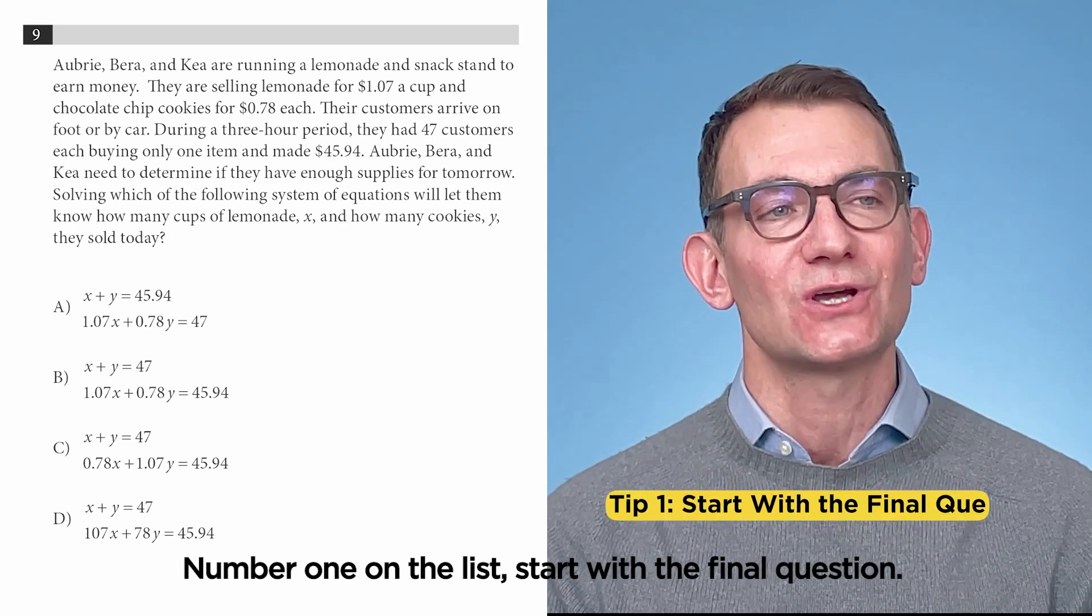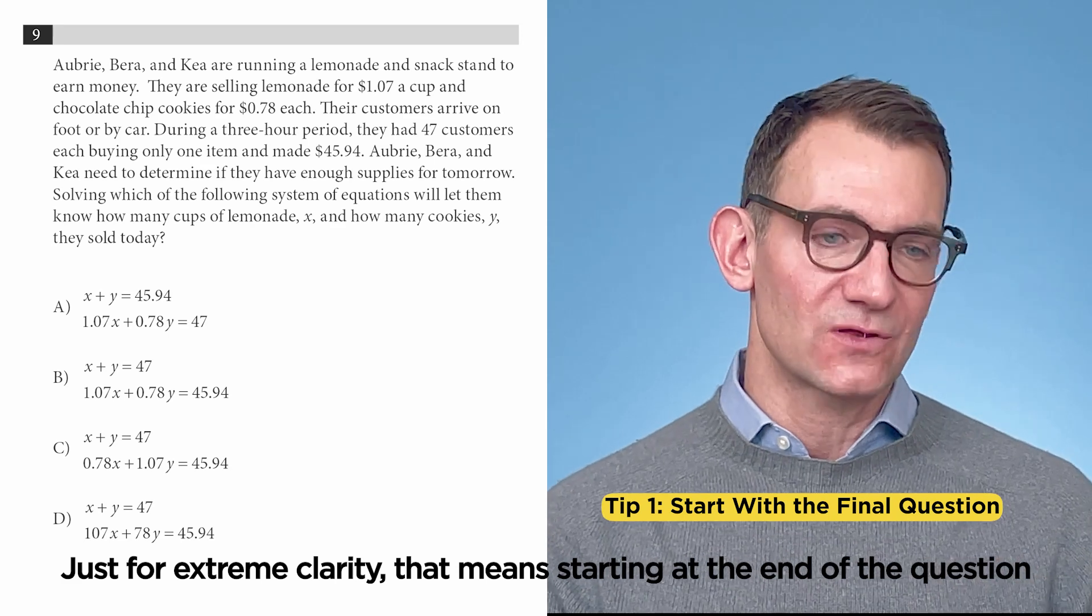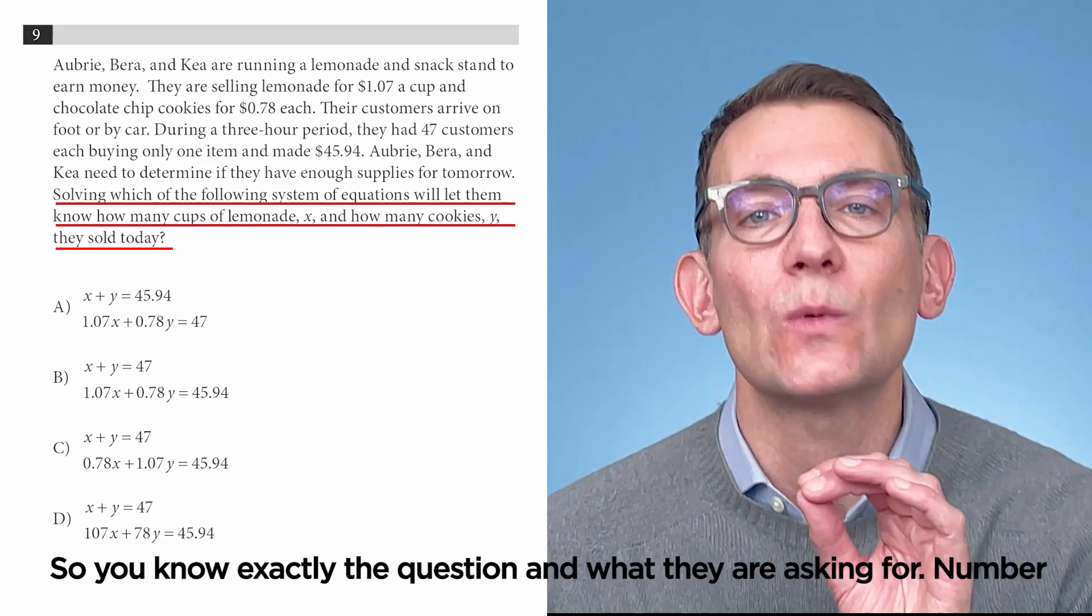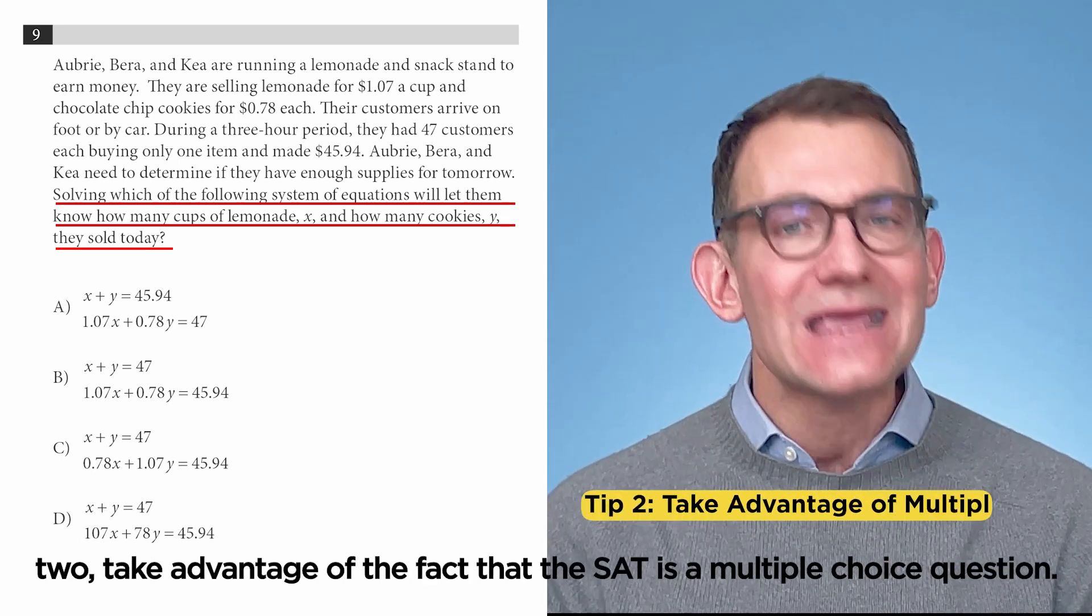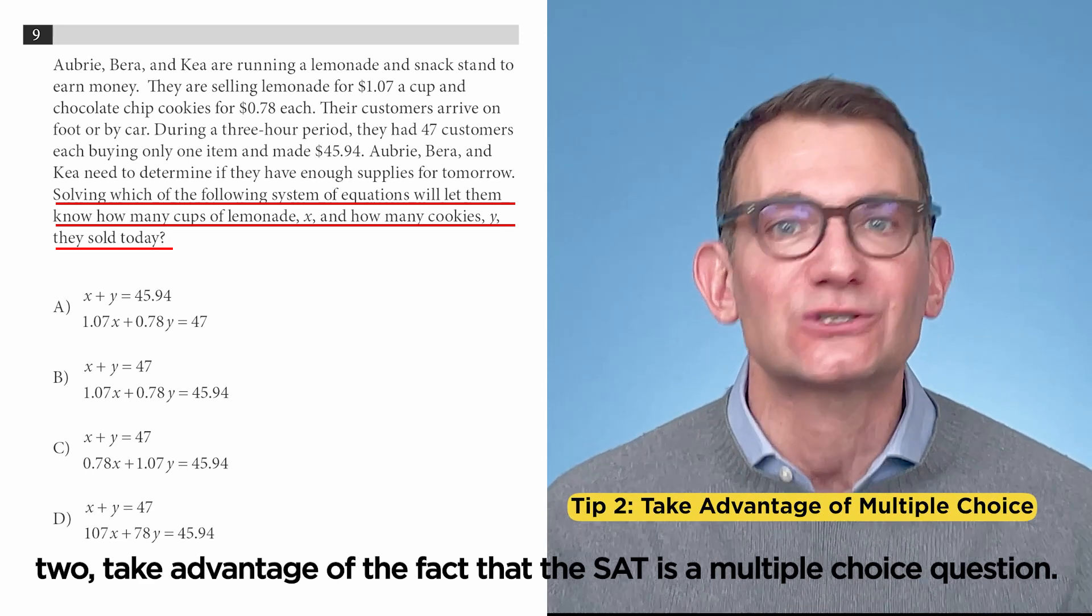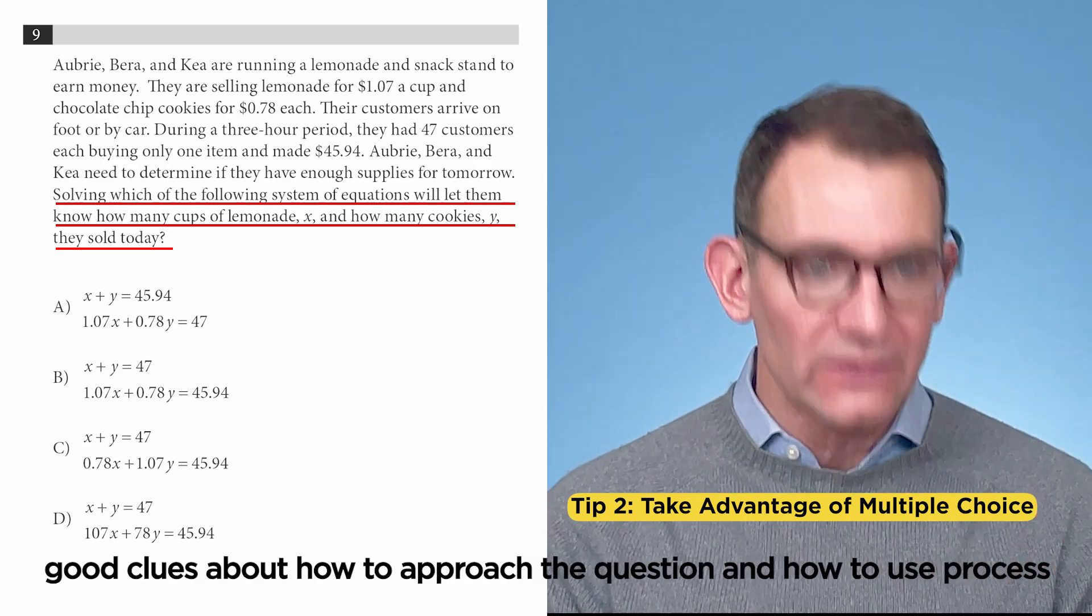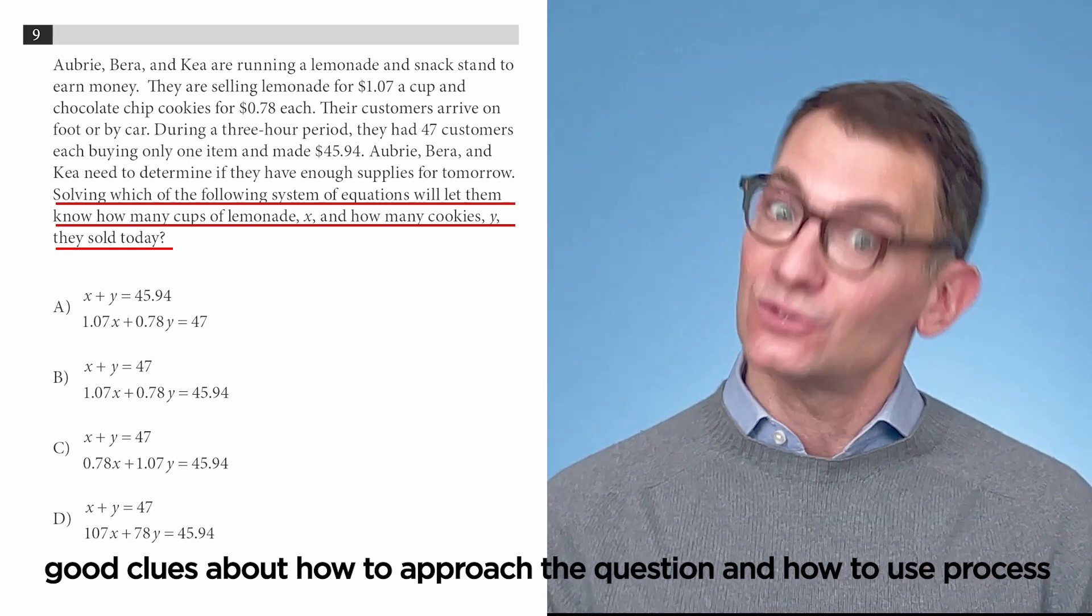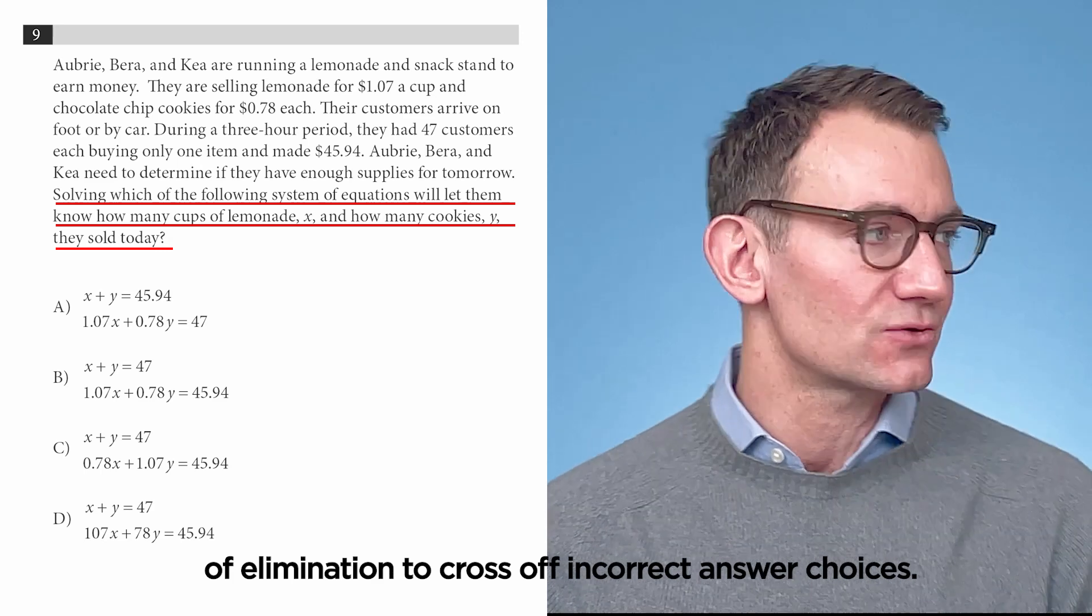Number one on the list, start with the final question. And just for extreme clarity, that means starting at the end of the question and read and underline the final question so you know exactly the question and what they are asking for. Number two, take advantage of the fact that the SAT is a multiple choice question. As such, let the answers help you. Near always, they'll give you really good clues about how to approach the question and how to use process of elimination to cross off incorrect answer choices.